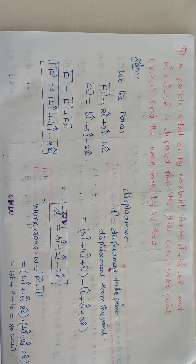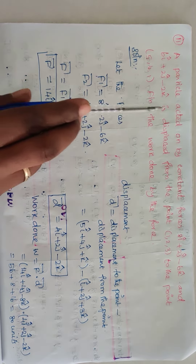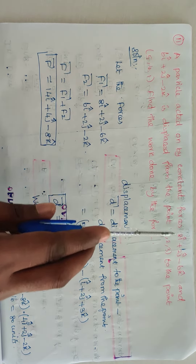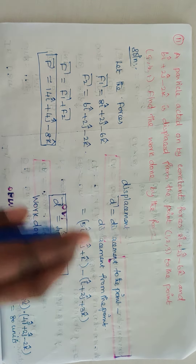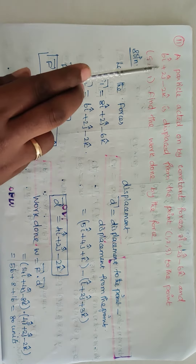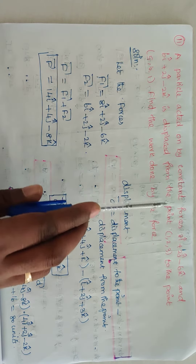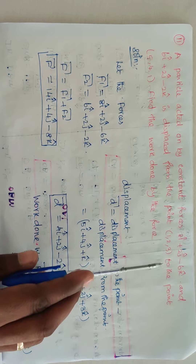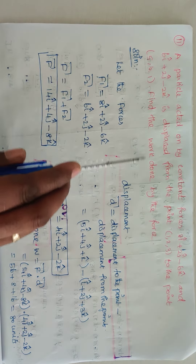Hi students, now we are going to discuss exercise 6.1 question number 11. A particle acted on by constant forces 8i + 2j − 6k and 6i + 2j − 2k is displaced from the point (1, 2, 3) to the point (5, 4, 1). Find the work done by the force.